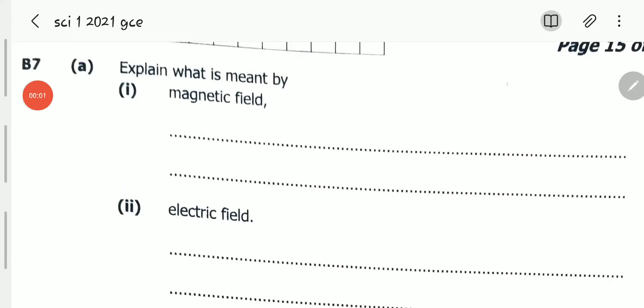Hello viewers, welcome to this video. In this video, we will be looking at the 2021 GCE Science Paper 1, Question B7. Question B7 reads: (a) Explain what is meant by (i) magnetic field and (ii) electric field. So here they want us to define what a magnetic field is and what an electric field is.